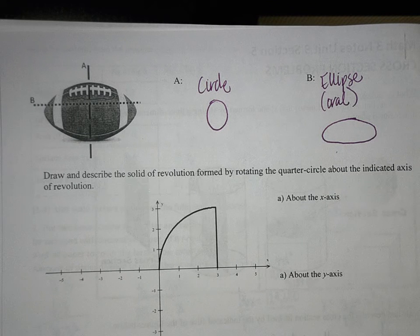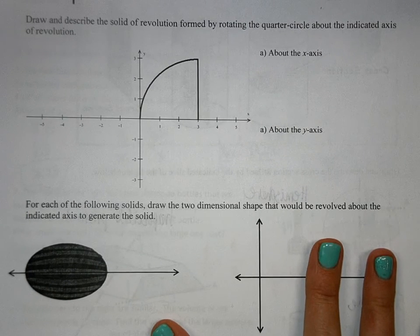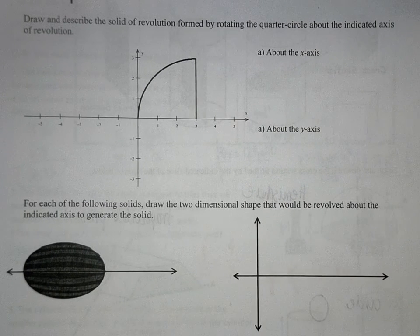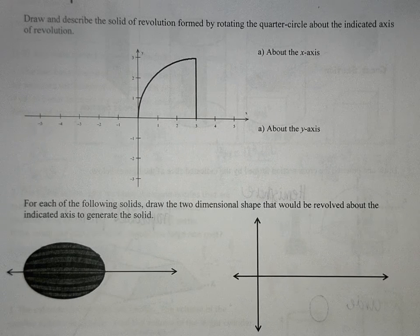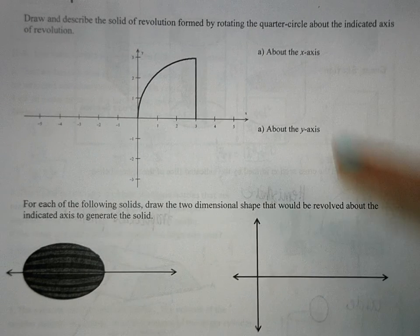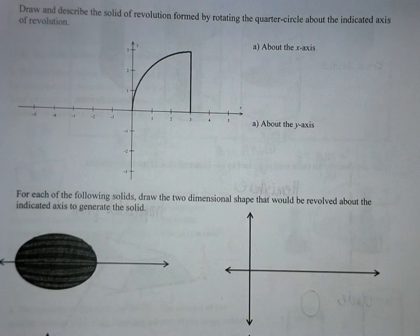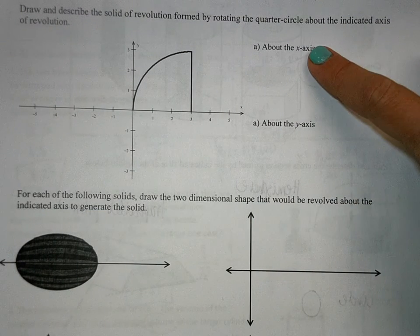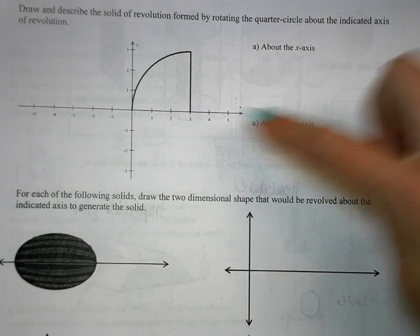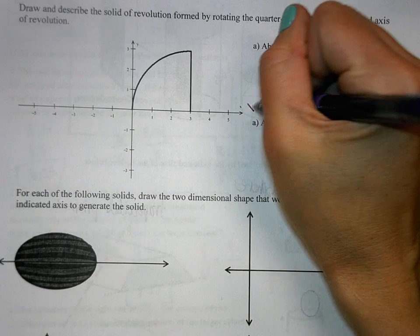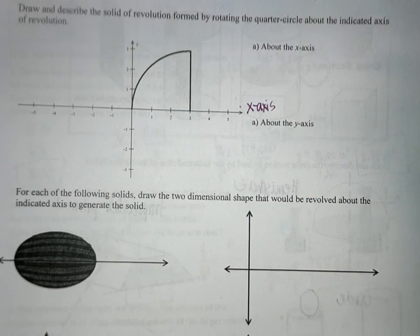All right, here they have asked us to draw and describe the solid of revolution formed by rotating a quarter-circle about the indicated axis of revolution. So this says it's going to rotate about the x-axis. So this is our x-axis, correct? Yes.